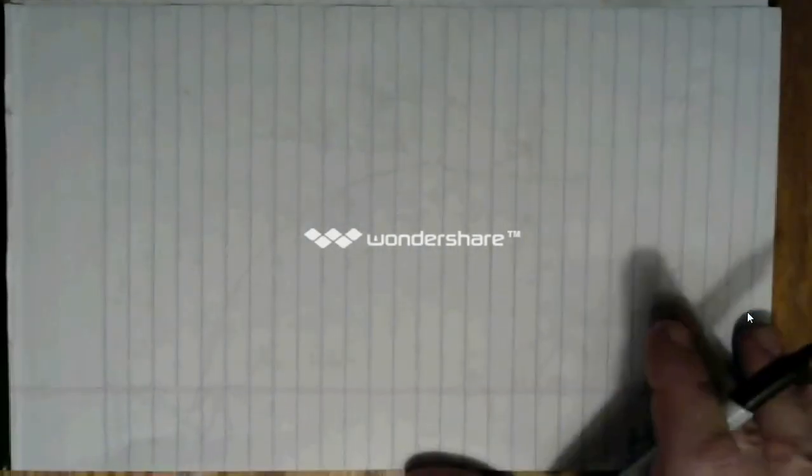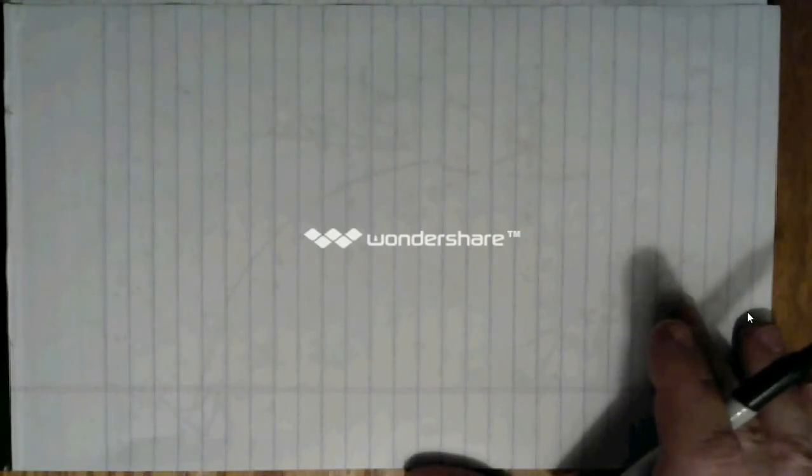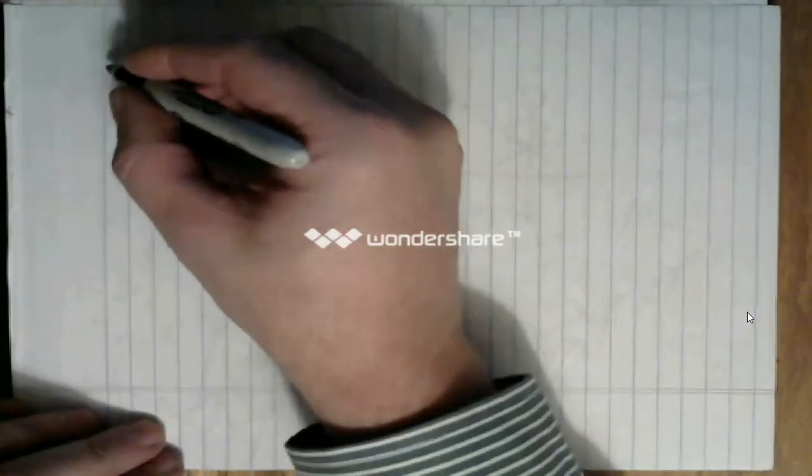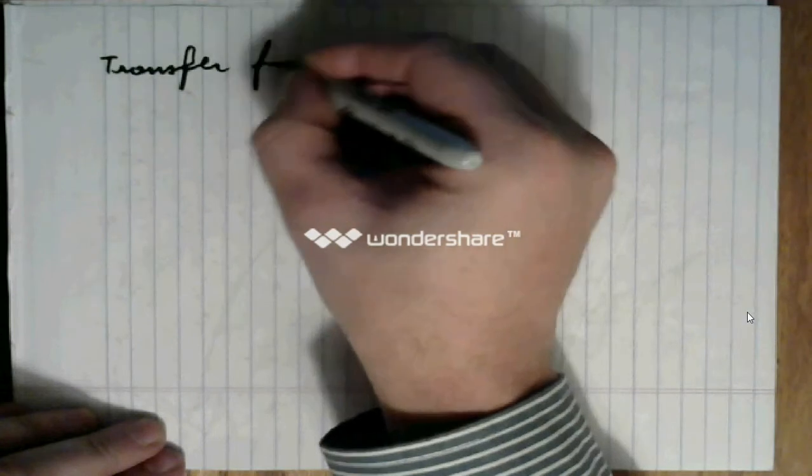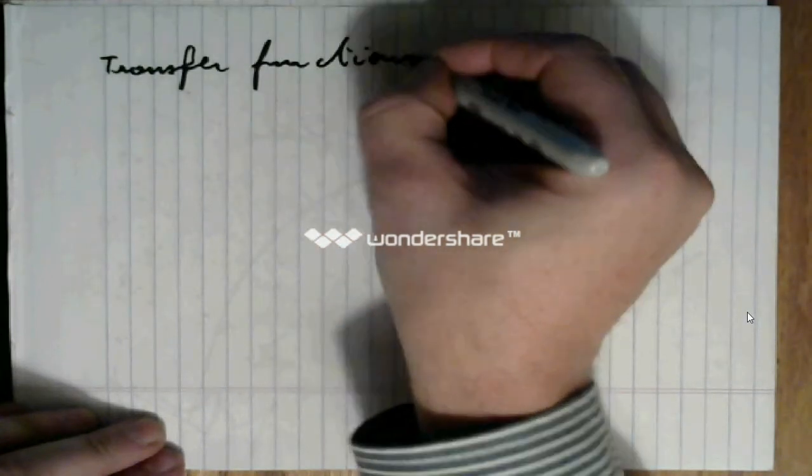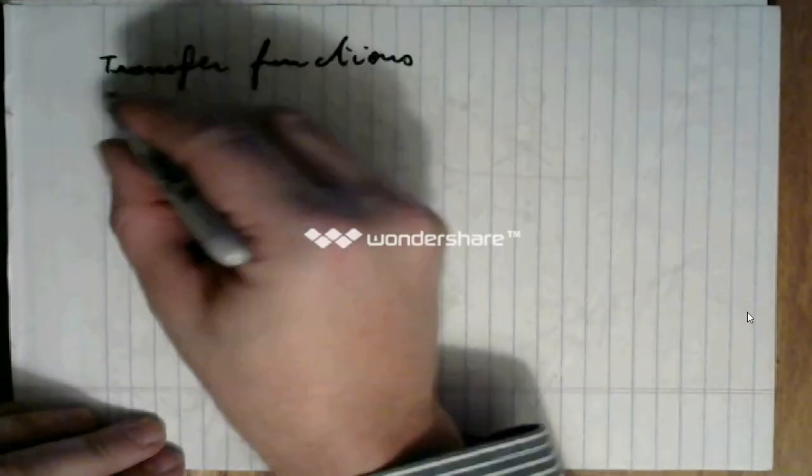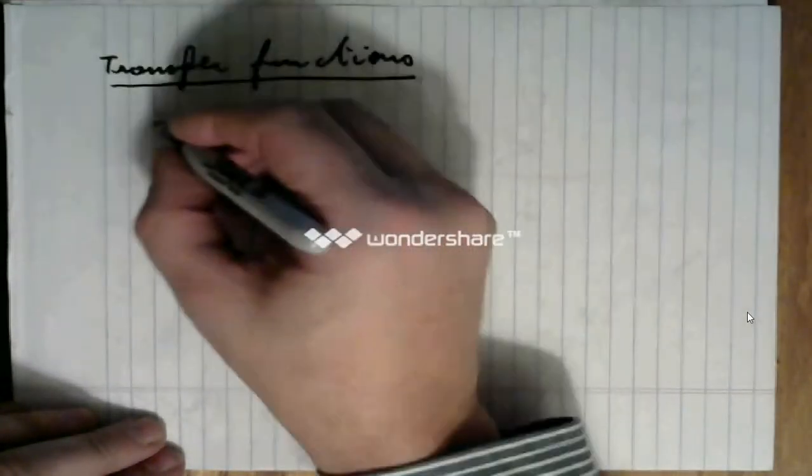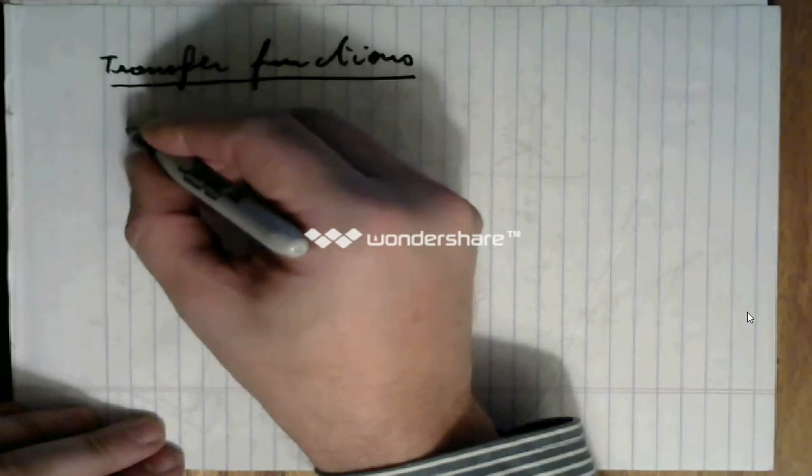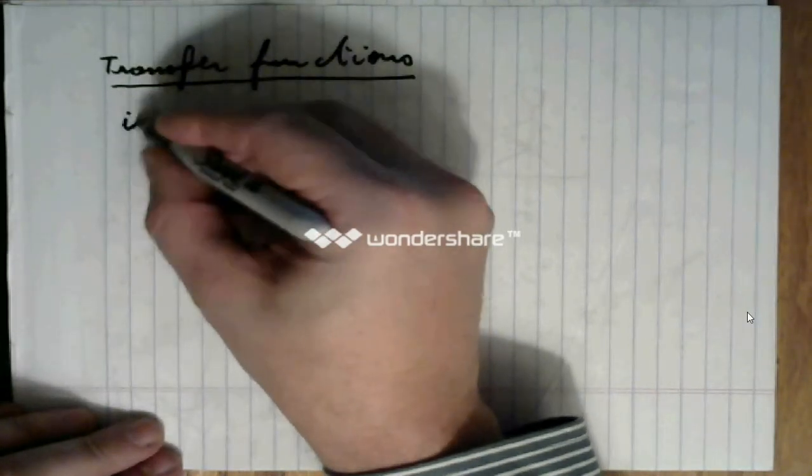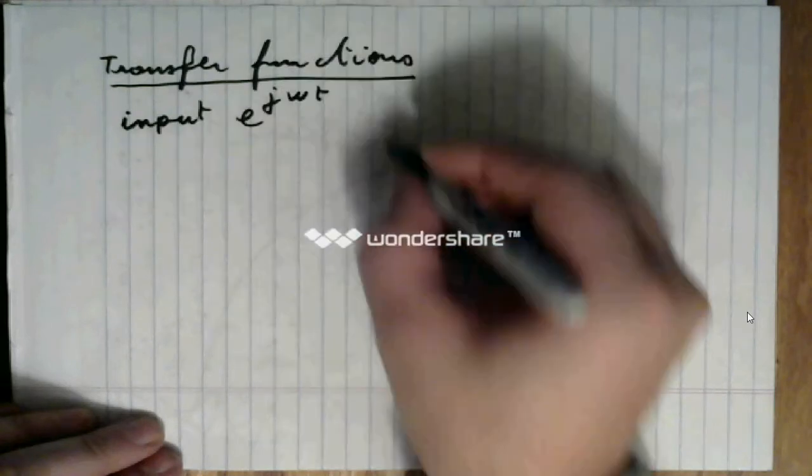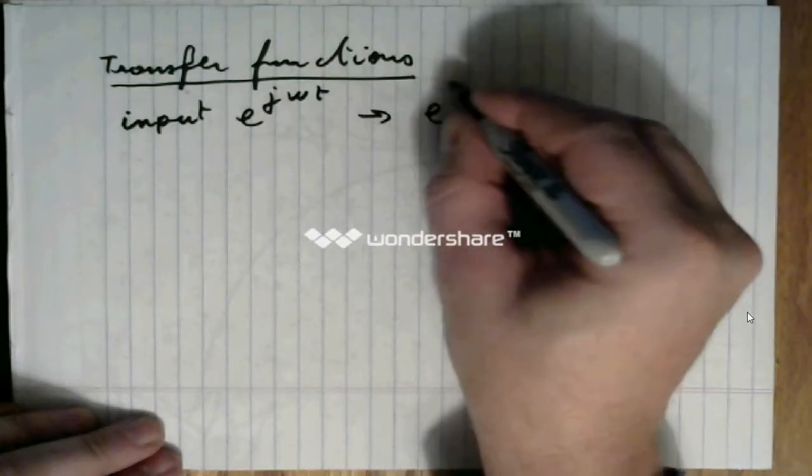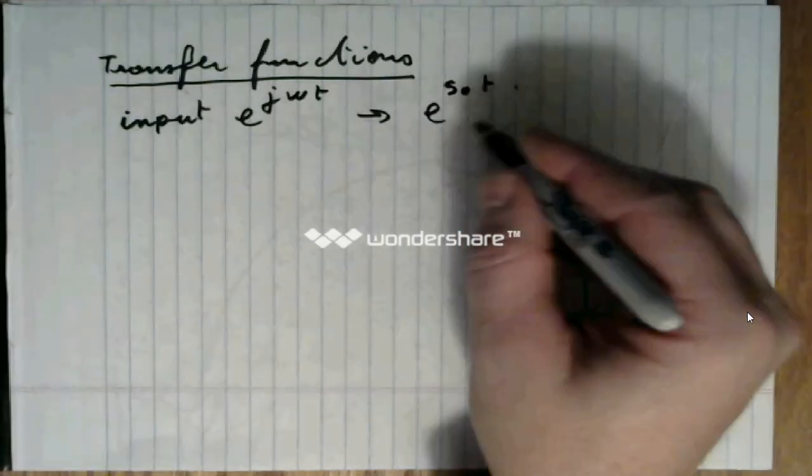It is possible to extend our usage of transfer functions to other kind of inputs. We can, for example, replace the input e to the j omega t by e to the s zero times t, from t ranging from zero to infinity.